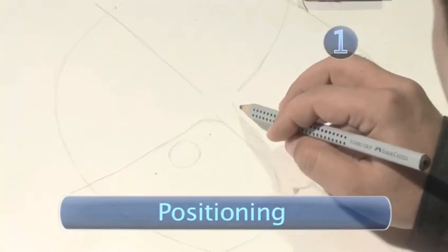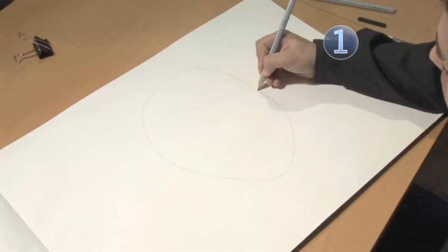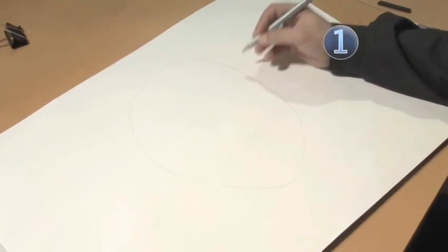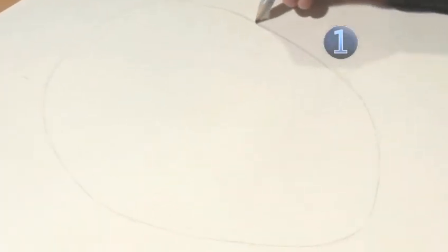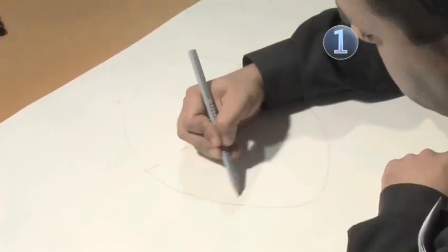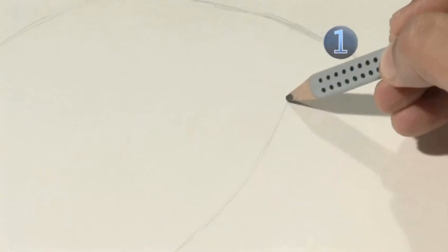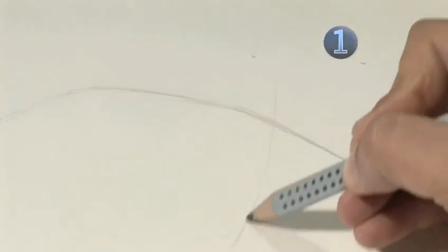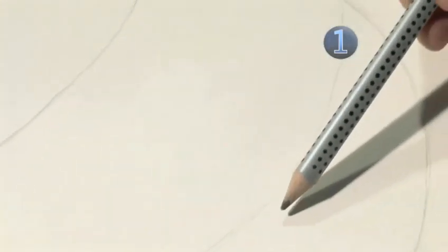Step 1: Positioning. To get the eyes in the right position on the face, start by drawing a face roughly in the shape of an upside-down egg, and then draw guidelines to divide the face into three sections. Draw the guidelines so they're curved to the bottom, and draw them faintly so they can be erased later.